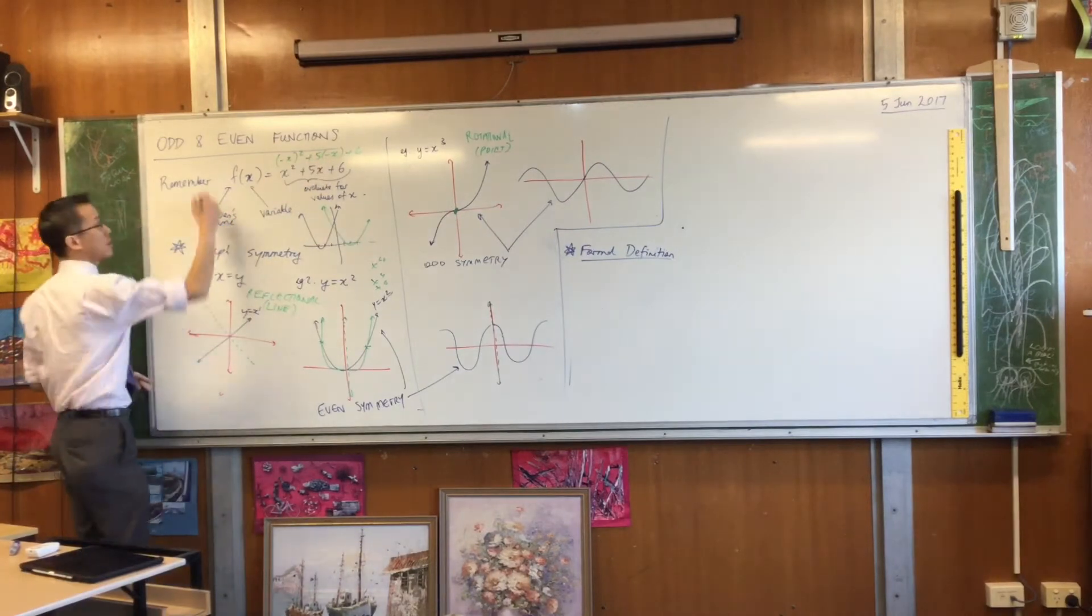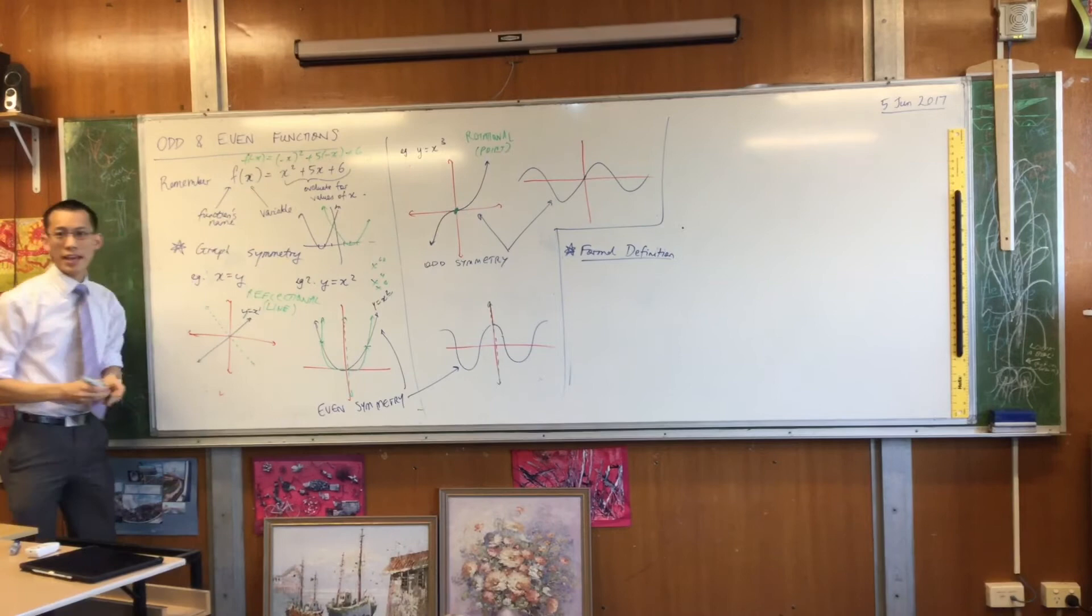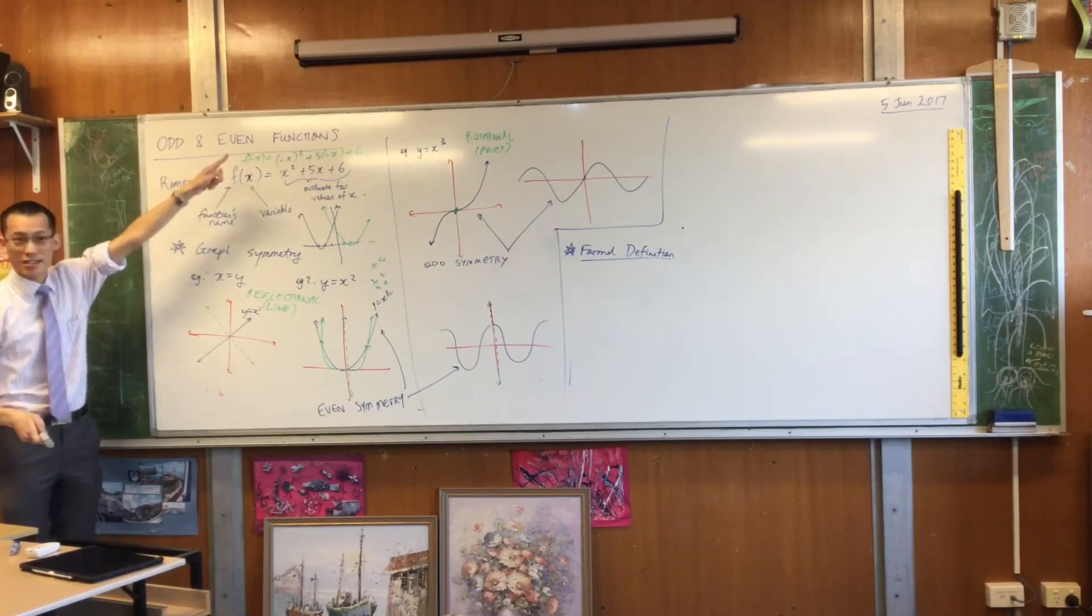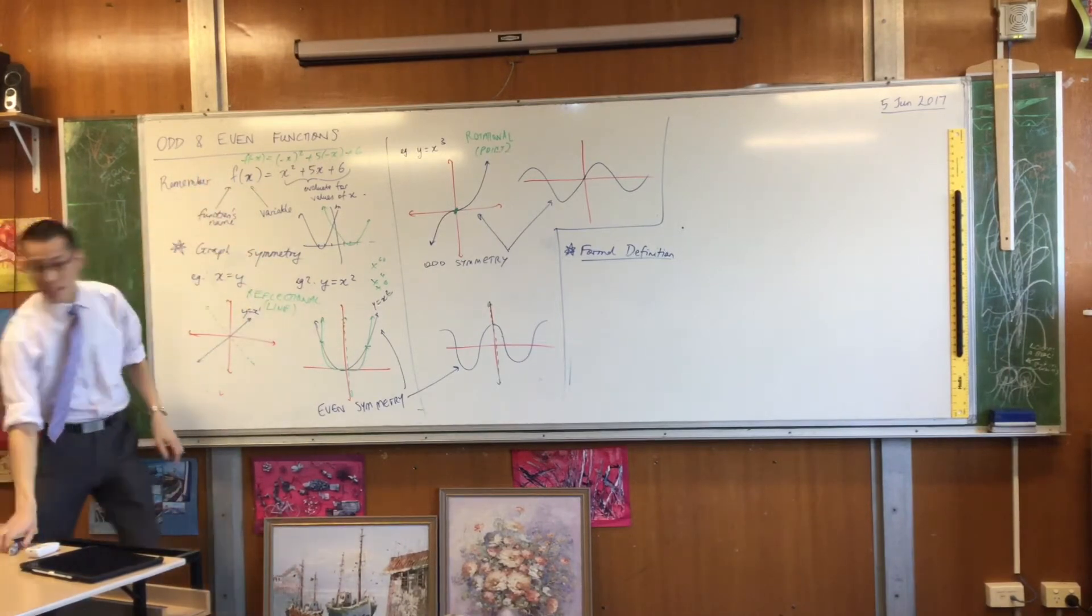So how would you write that in function notation? f of negative x. So now we can use this to talk about odd and even symmetry.